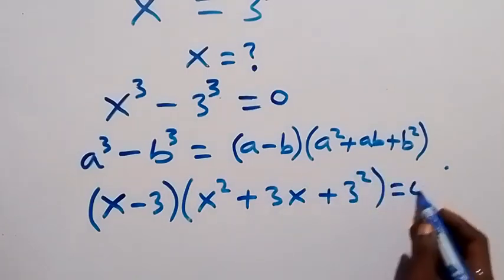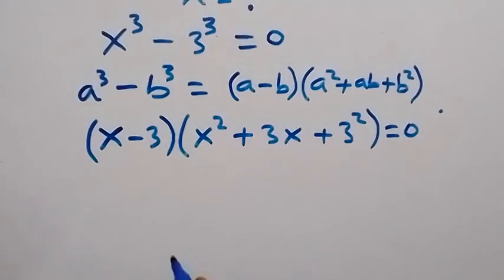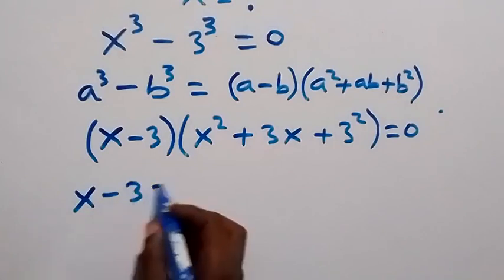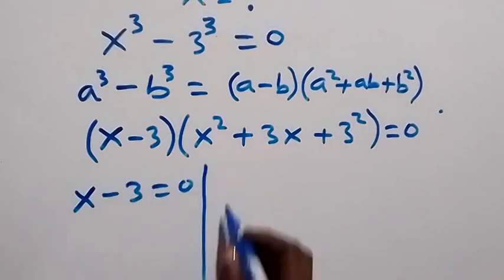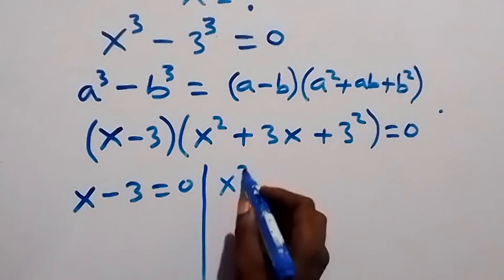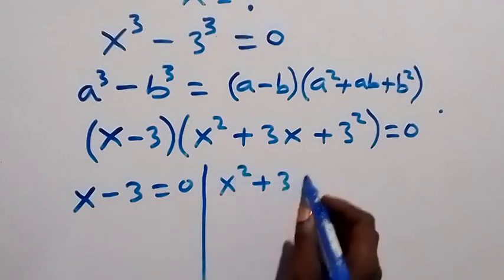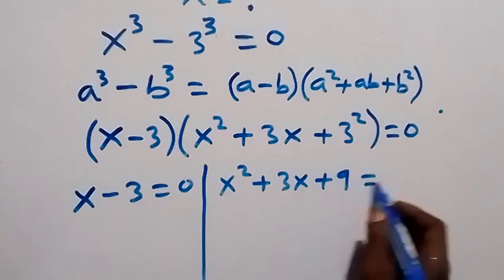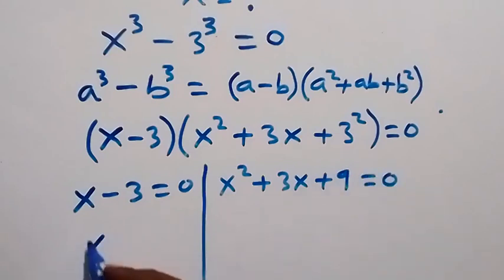So we have two possible cases here: that is x - 3 = 0, or we have x² + 3x + 3², which is 9, equals to 0. From here, x equals to 3.